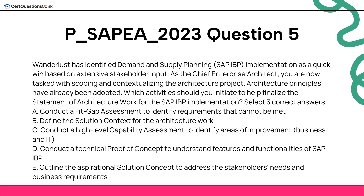Select three correct answers. A. Conduct a fit-gap assessment to identify requirements that cannot be met. B. Define the solution context for the architecture work. C. Conduct a high-level capability assessment to identify areas of improvement — business and IT. D. Conduct a technical proof of concept to understand features and functionalities of SAP IBP. E. Outline the aspirational solution concept to address the stakeholders' needs and business requirements.